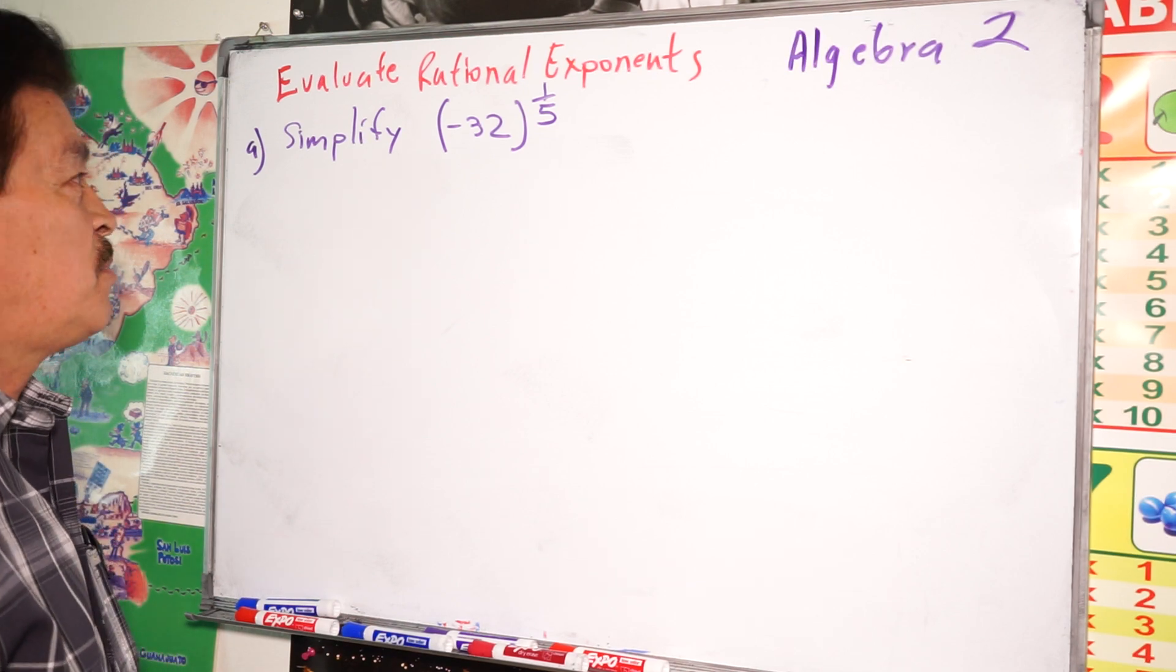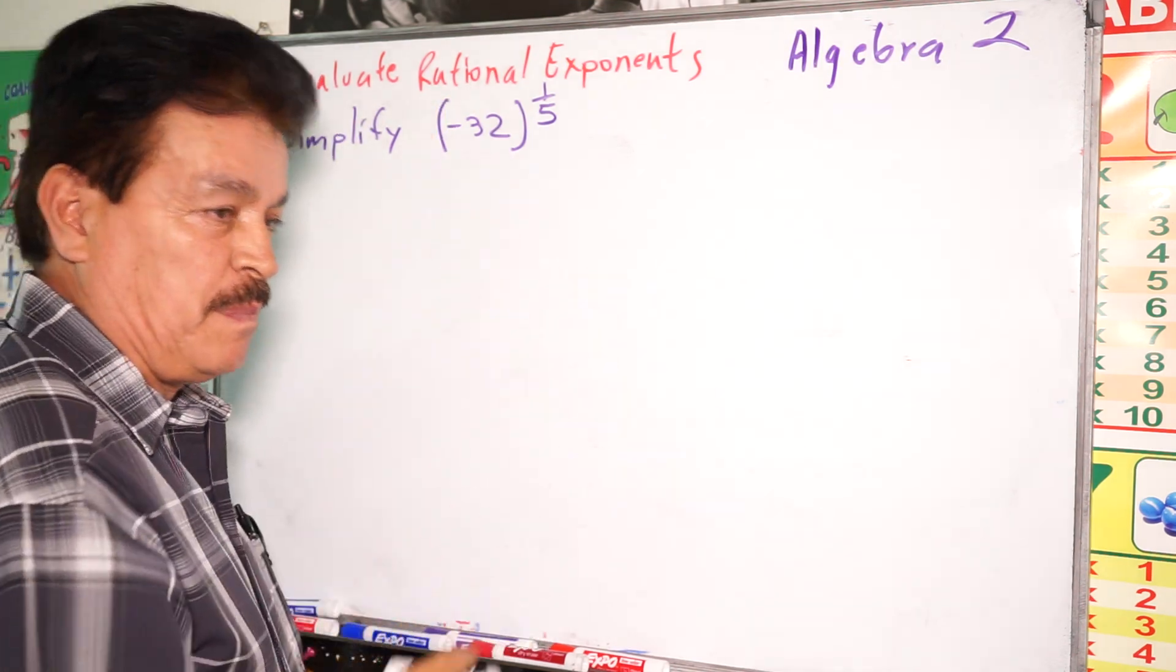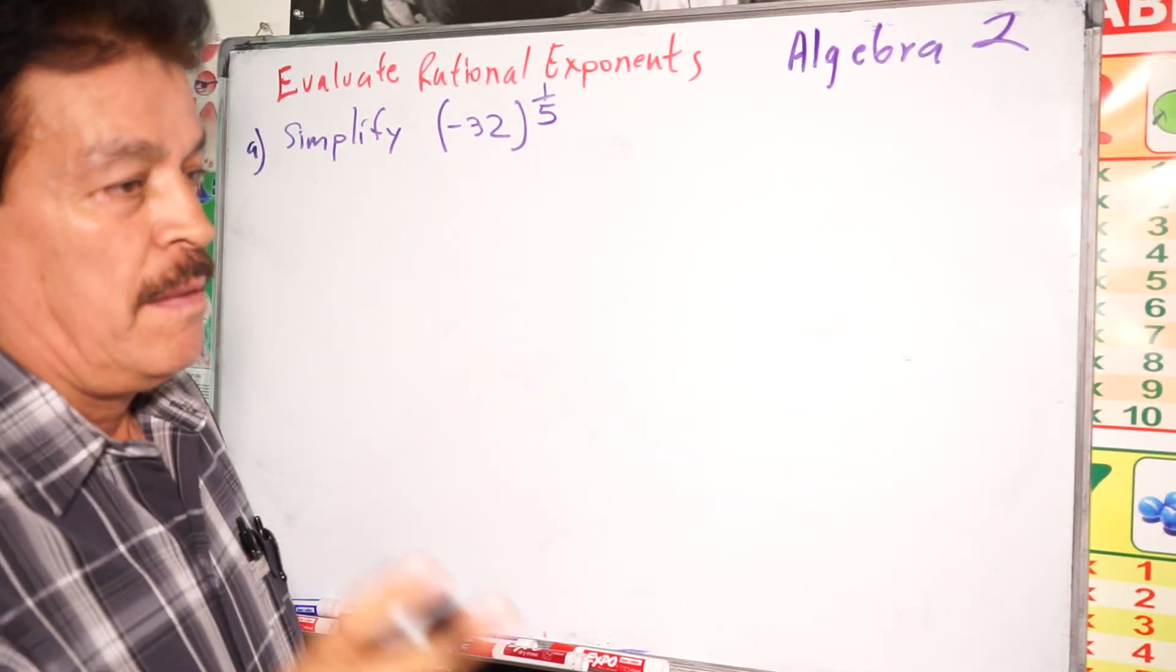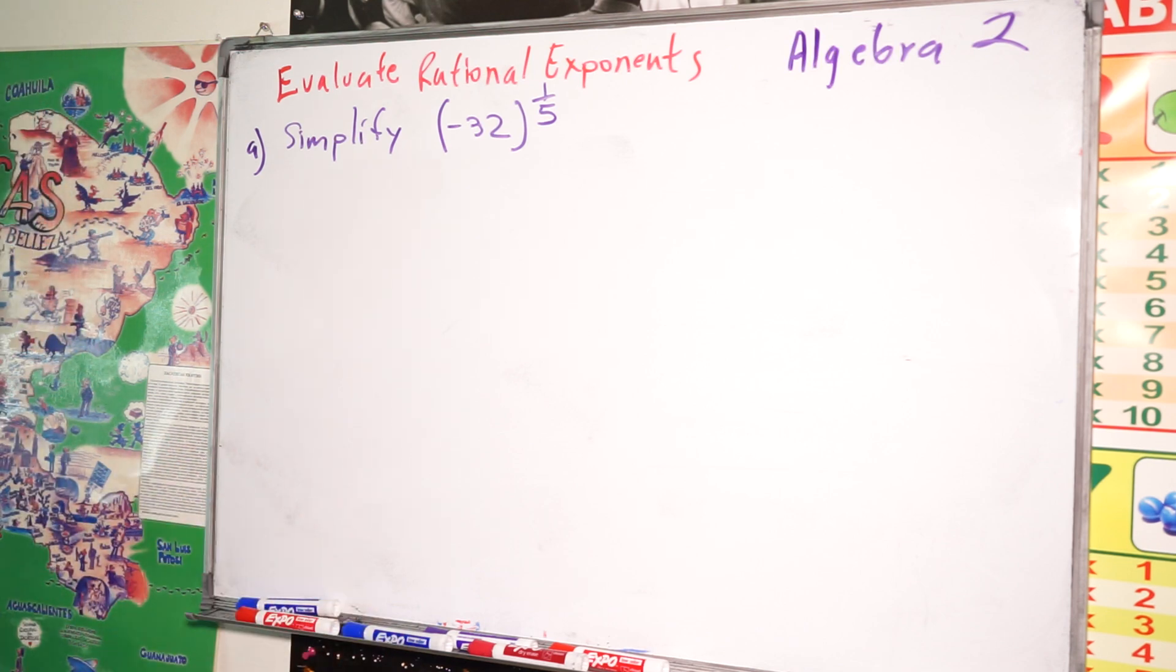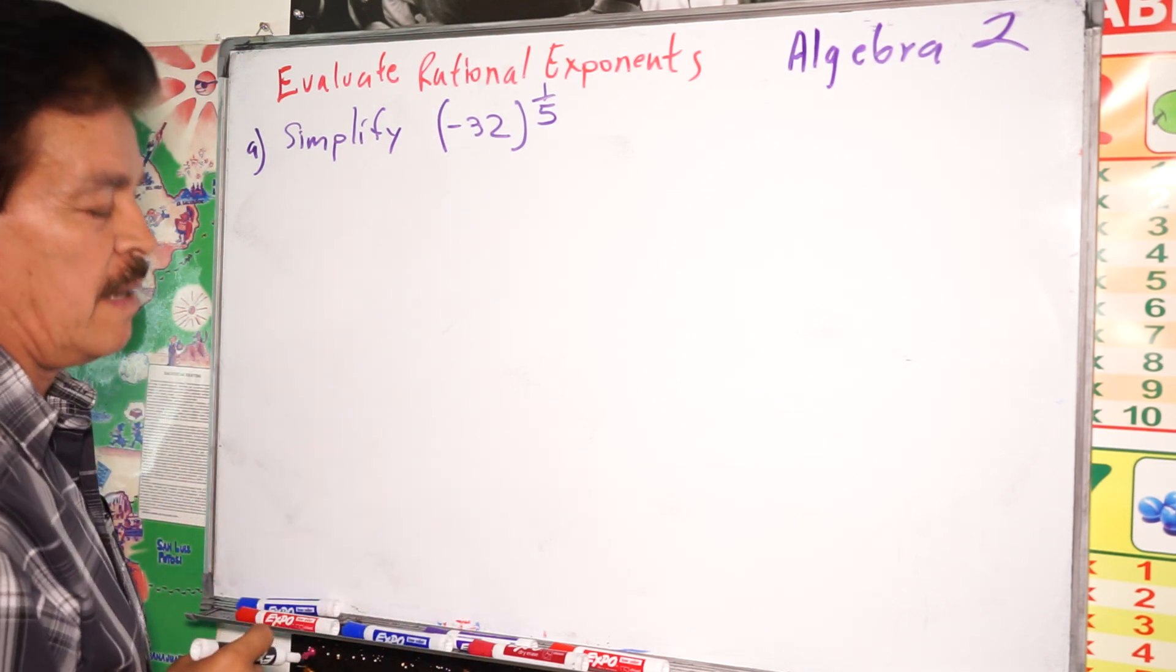Our first problem is simplify (-32)^(1/5). Before, let me explain some ideas that we have to remember.